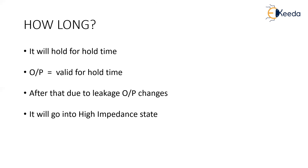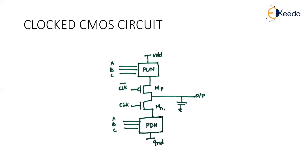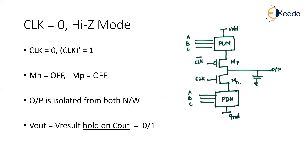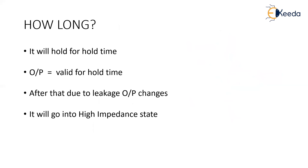So what is C-squared MOS logic? It is nothing but static CMOS logic combined with clock signals. If your clock is equal to 1, it will behave like a static logic mode. If your clock is 0, it will go into the high impedance mode and will store its value only for some time — that is called the hold time. The next topic is NORA or NP Domino logic. Thank you.